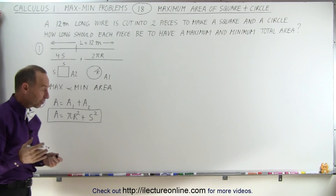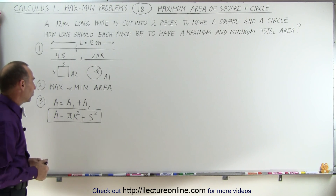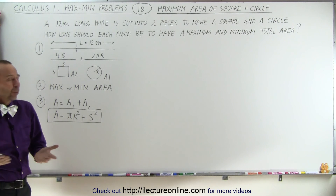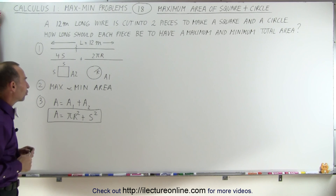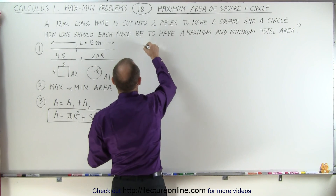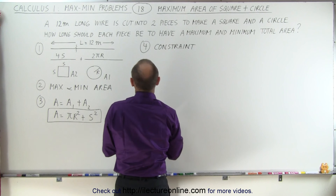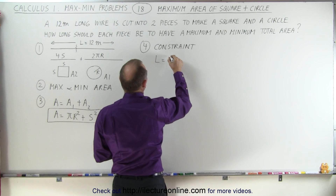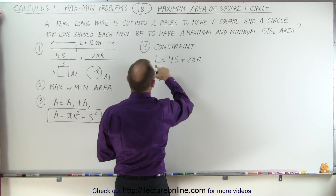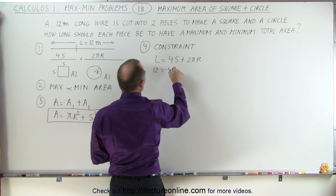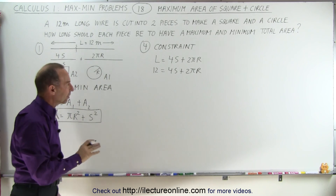Notice we now have an equation that we can find the maximum or minimum area for, but we have dependency on both the radius of the circle and the side of the square. So the next step is we need a constraint to relate r to s. The constraint tells us that the total length equals the perimeter of the square plus the circumference of the circle: 12 = 4s + 2πr.